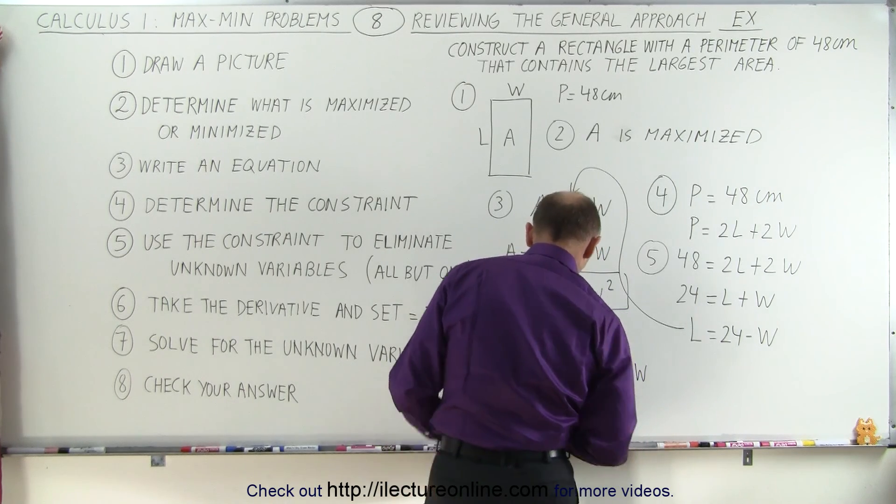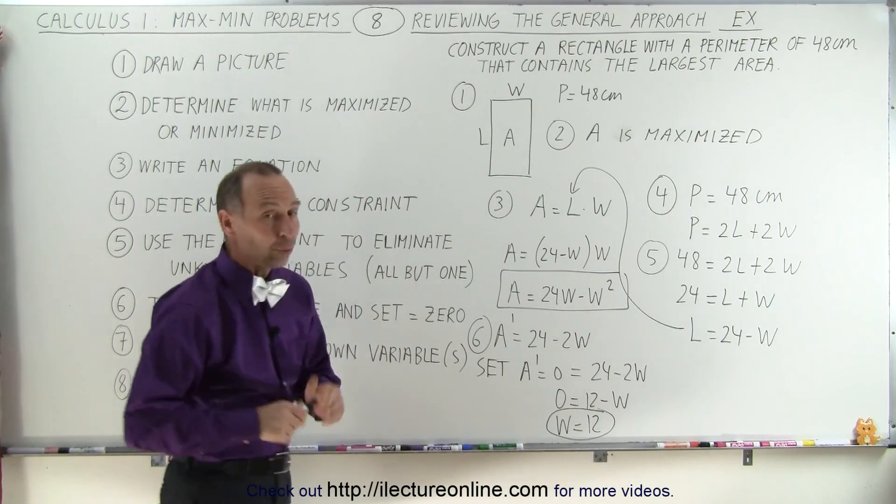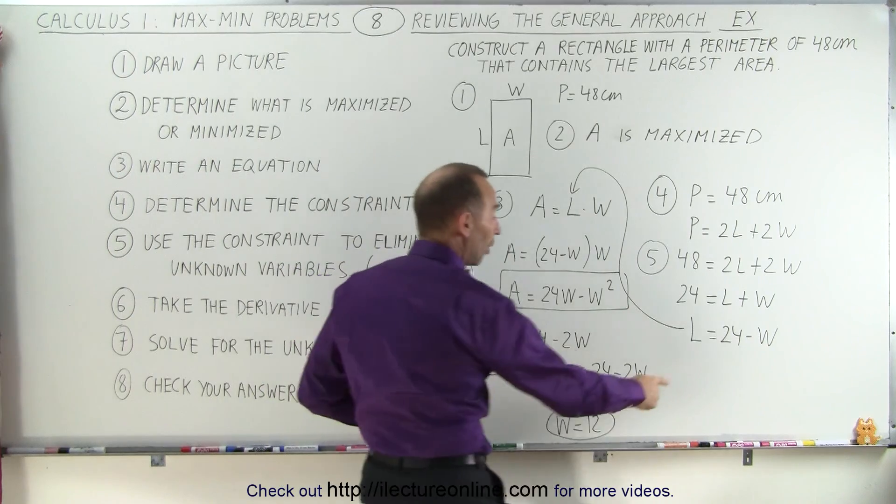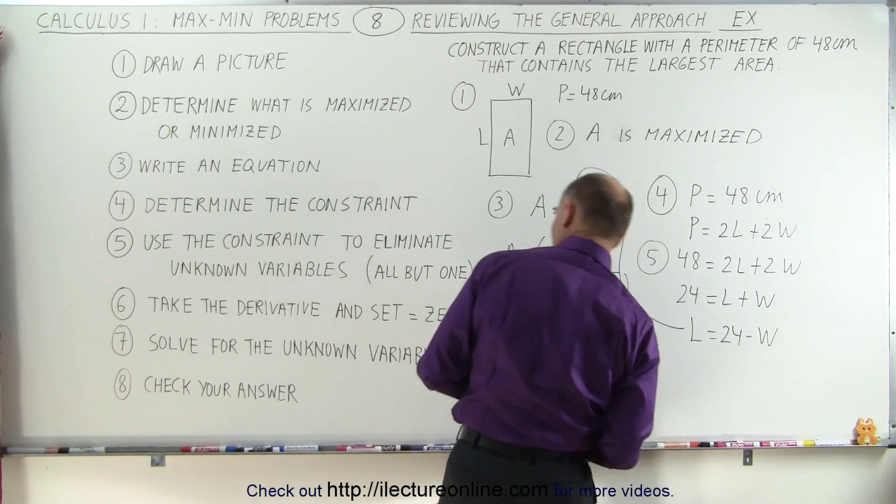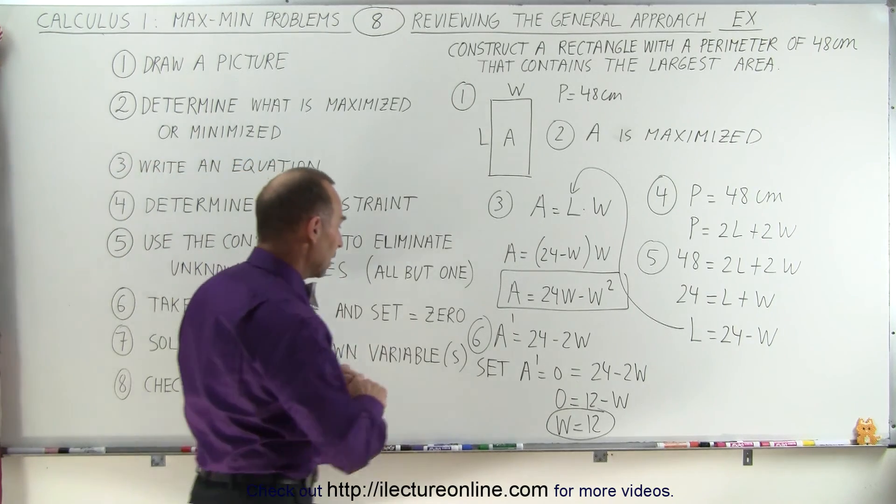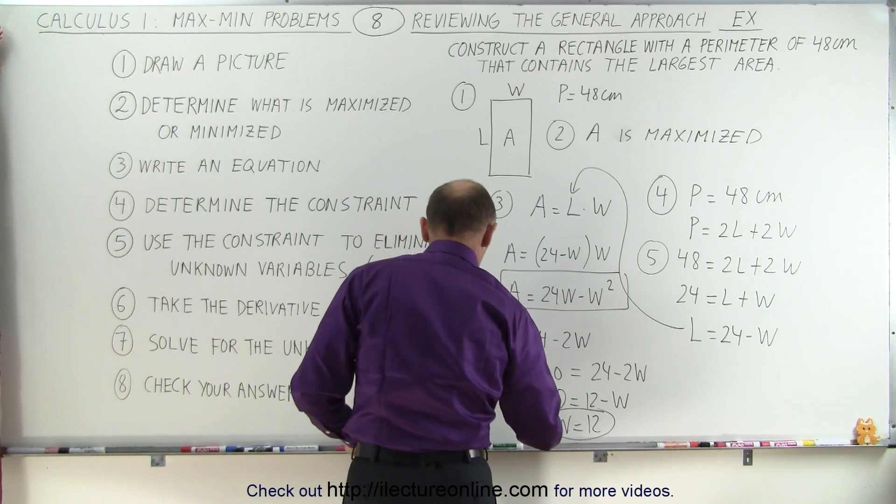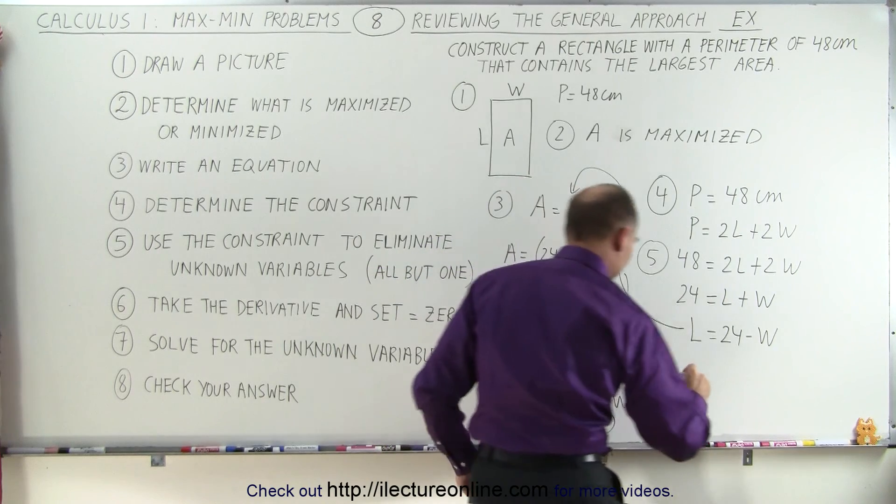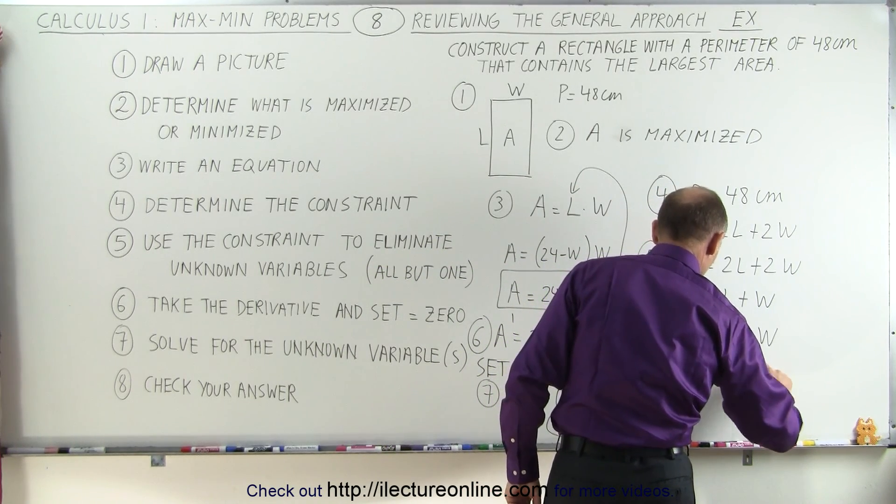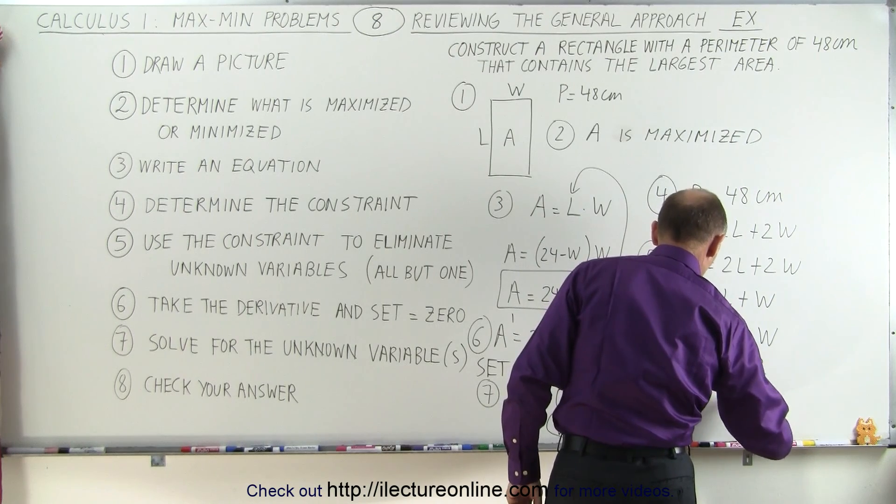And that tells us what the unknown W is, so the width needs to be 12. And once we know the width, we can now also solve for the length because we simply have to substitute that in for W. So seven is we're solving for the unknown variable, and sometimes we have to solve for the other unknown variable. So L is equal to 24 minus 12, or L is equal to 12 as well.